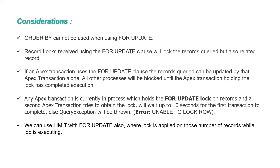Some considerations when using FOR UPDATE: do not use the ORDER BY clause. While locking the queried records, related records are also locked — meaning the parent related records will also be blocked. If an Apex transaction uses FOR UPDATE, the same Apex transaction holds the lock and all other processes will be blocked until that Apex transaction completes.